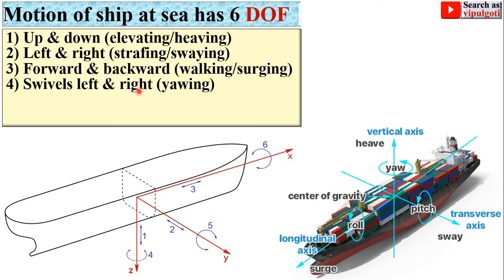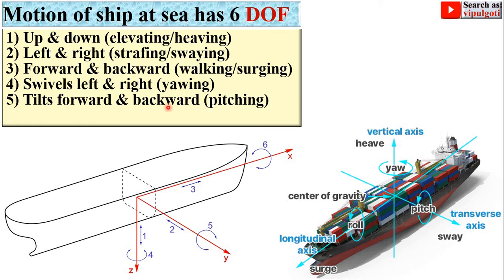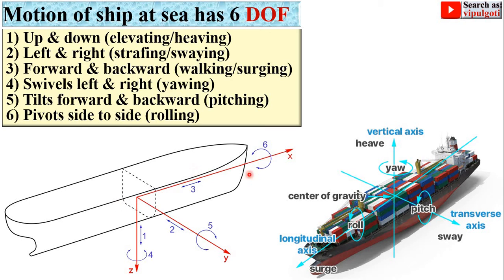Next, swivels left and right about the z-axis on the vertical axis — that is called yawing. Next, tilts forward and backward — that is called pitching — rotating about the y-axis, the transverse axis. And finally, pivots side to side about the x-axis, the longitudinal axis — that is called rolling.